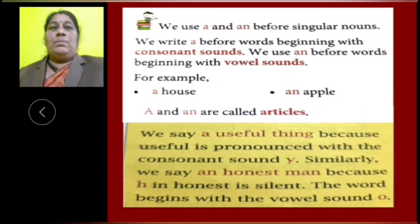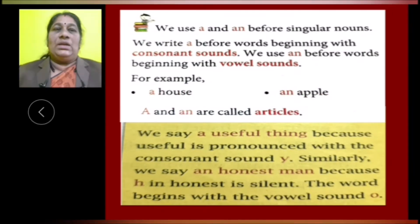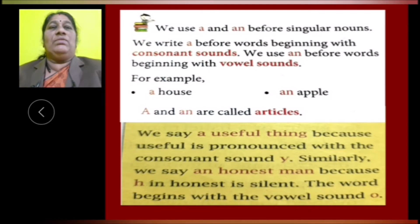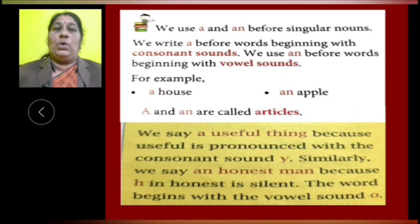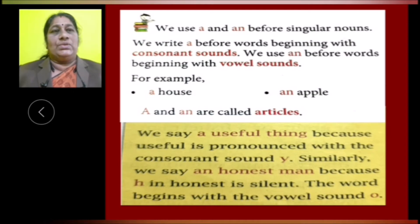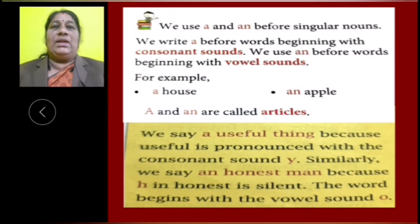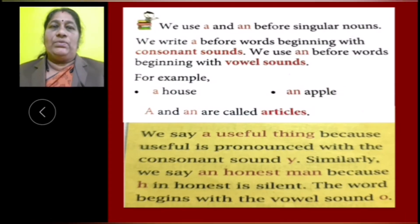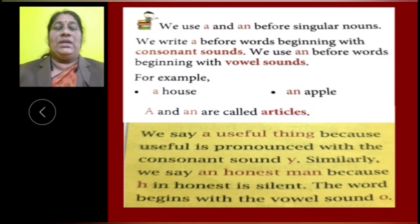For example, a house, an apple. Here, the word house started with a consonant letter, so article A is used. The next word apple started with a vowel letter, so article AN is used.